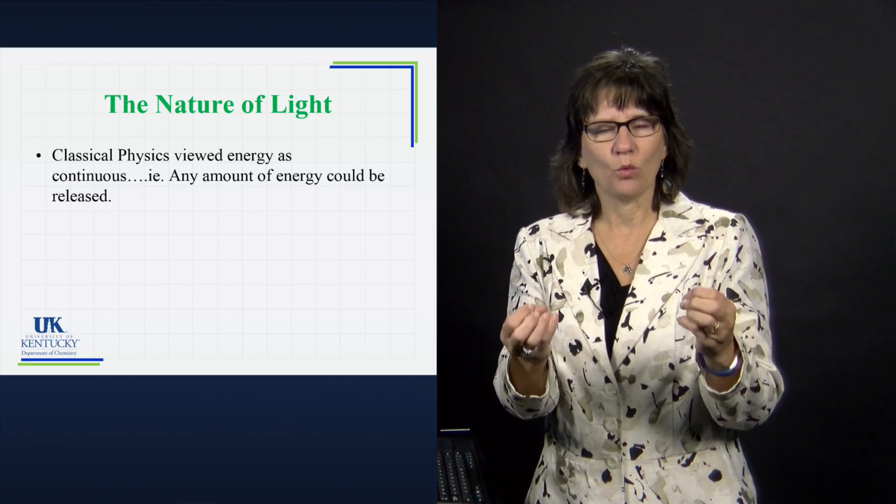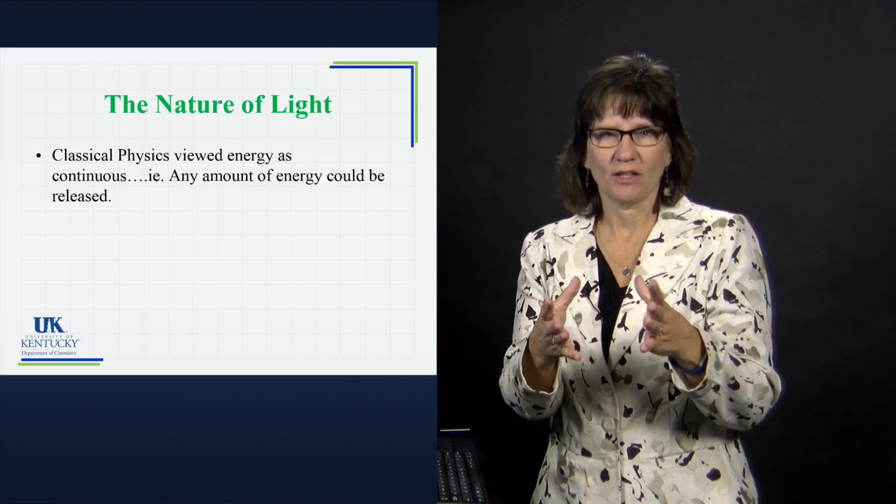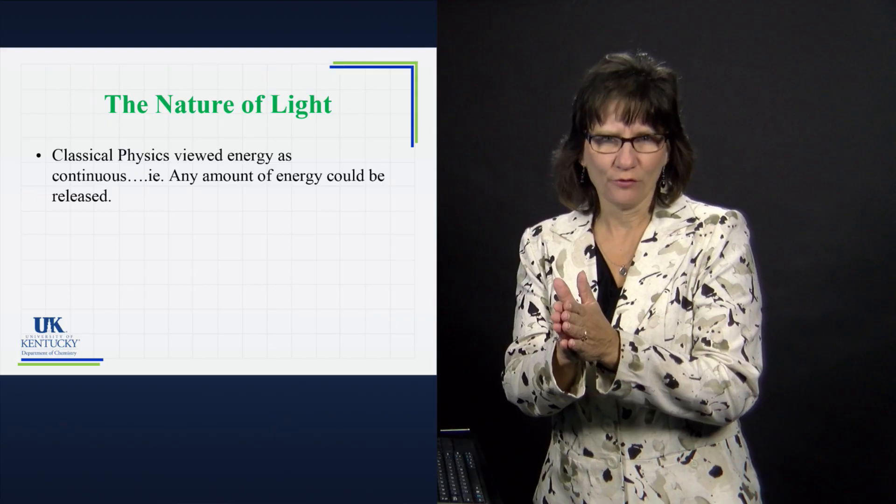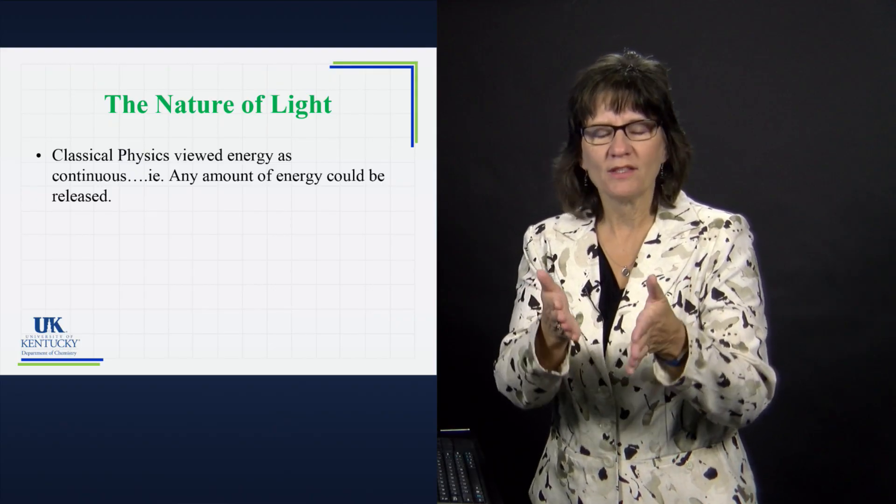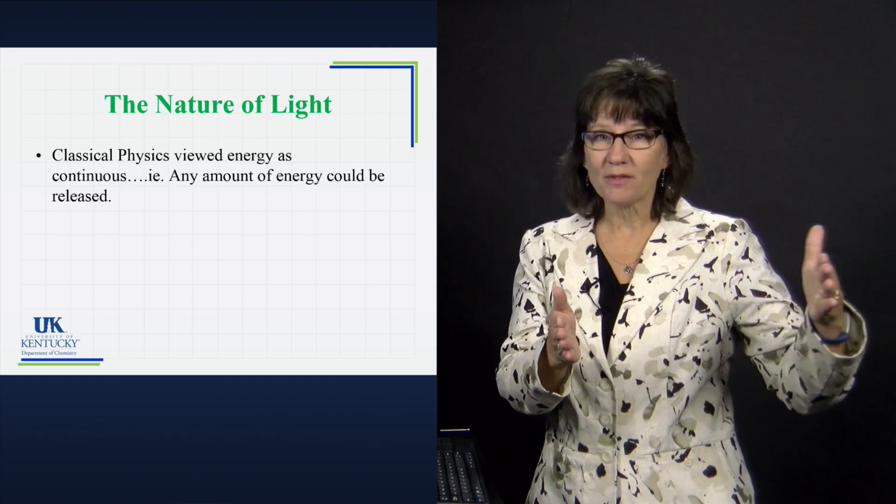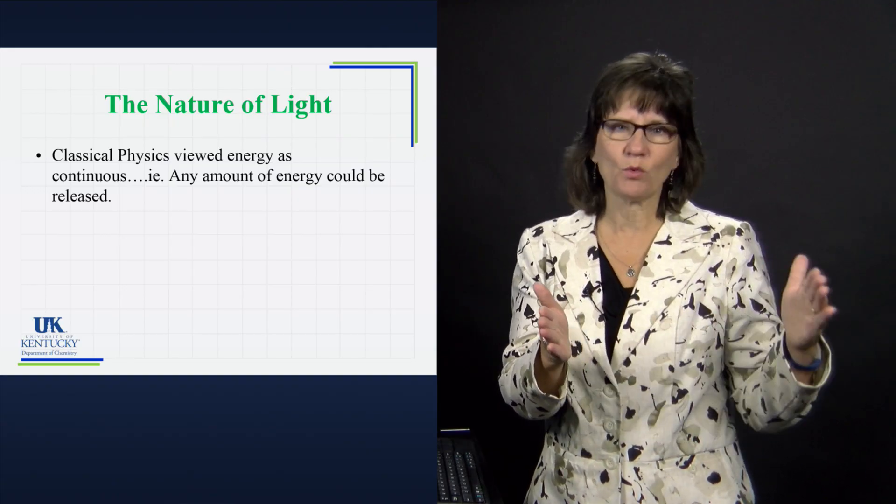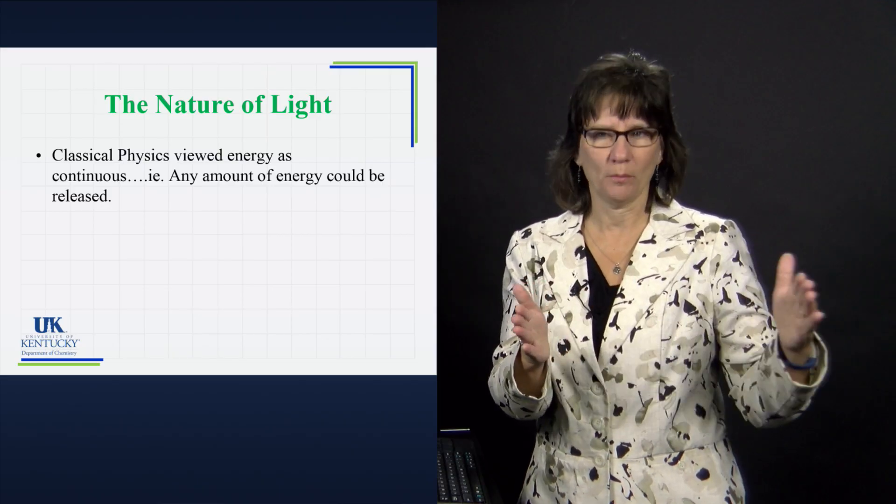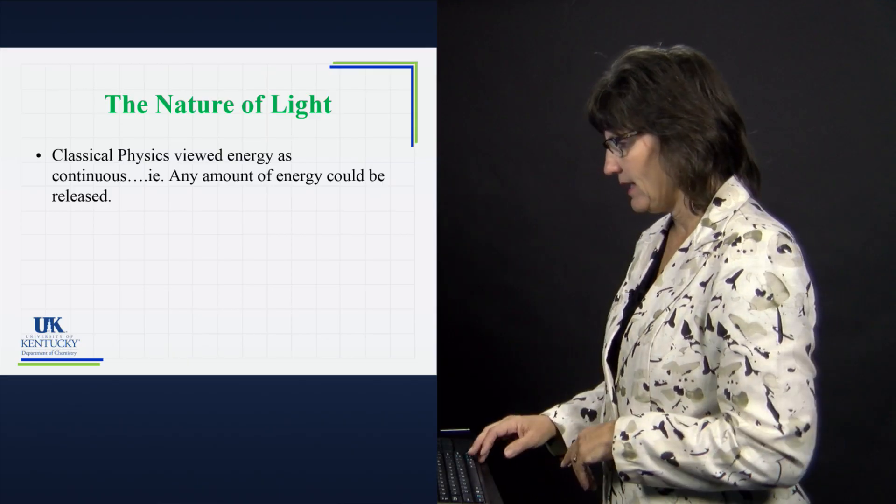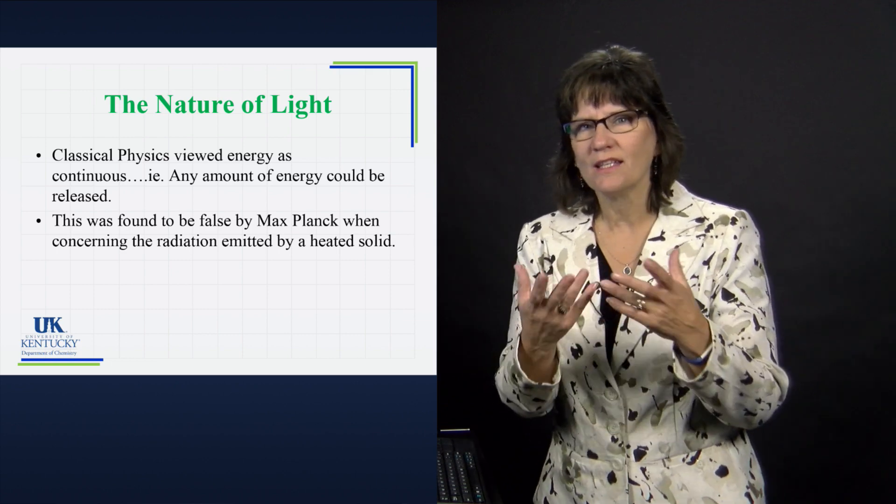For example, you can take a car and go 50 miles an hour, speed up to 70 miles an hour, and be any speed in between. That is a continuum of energy in a sense. Max Planck ushered in a whole new idea when he noticed that when you heated an object, you could only get certain amounts of energy released.